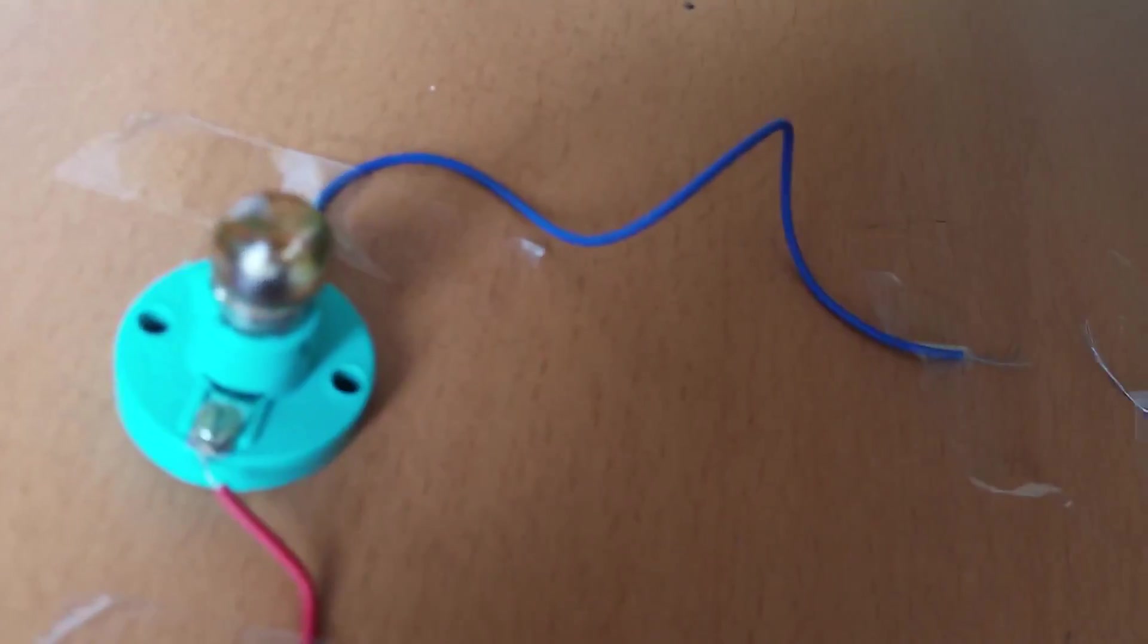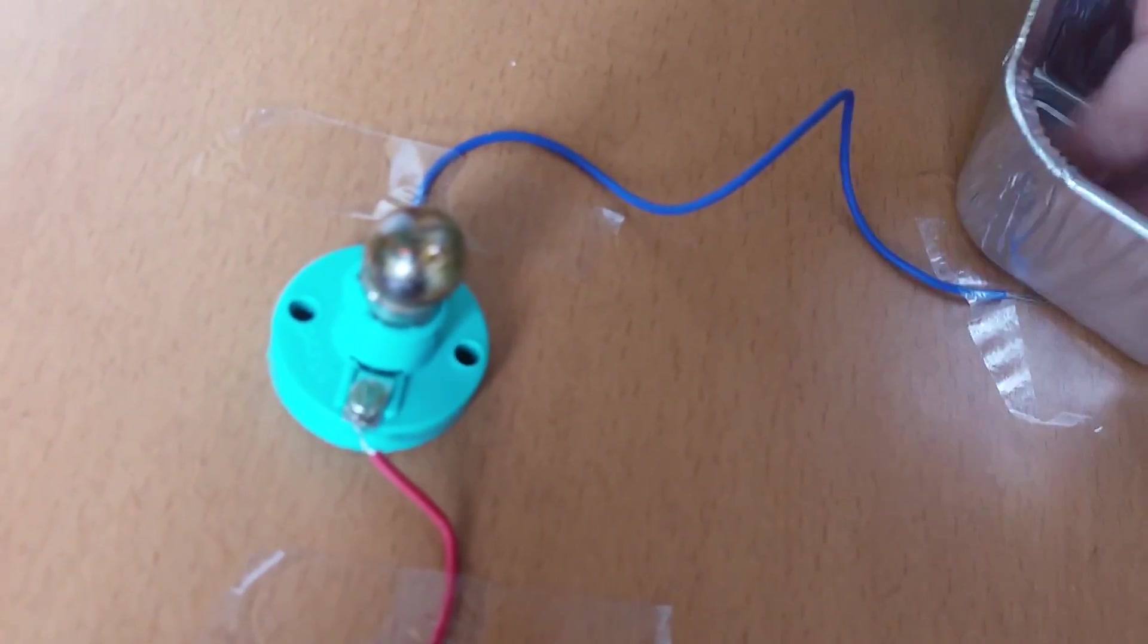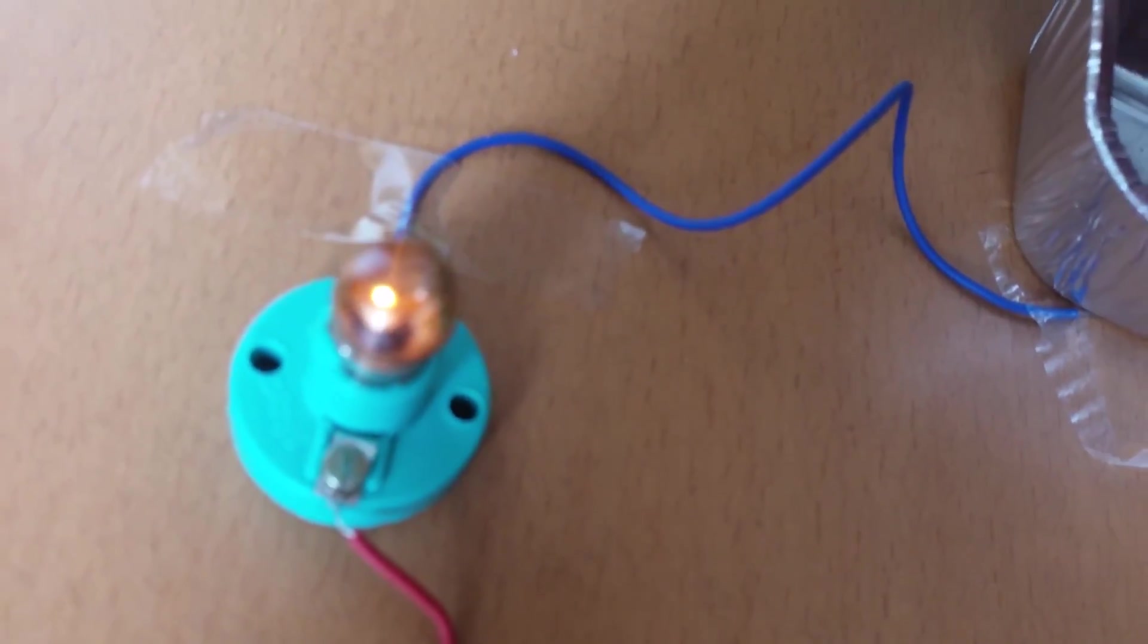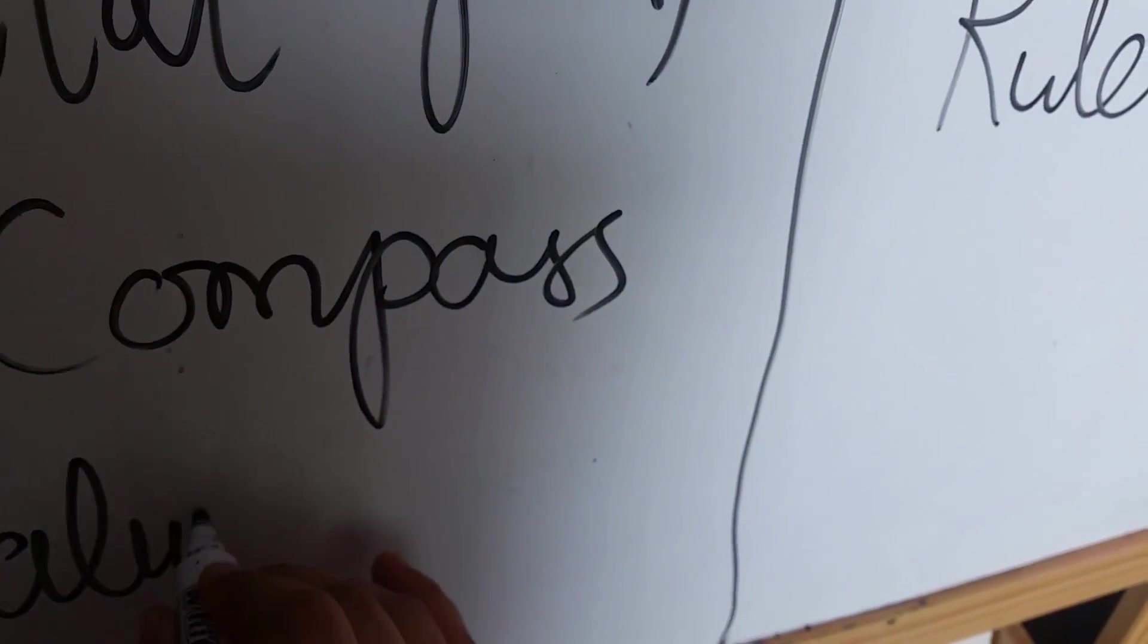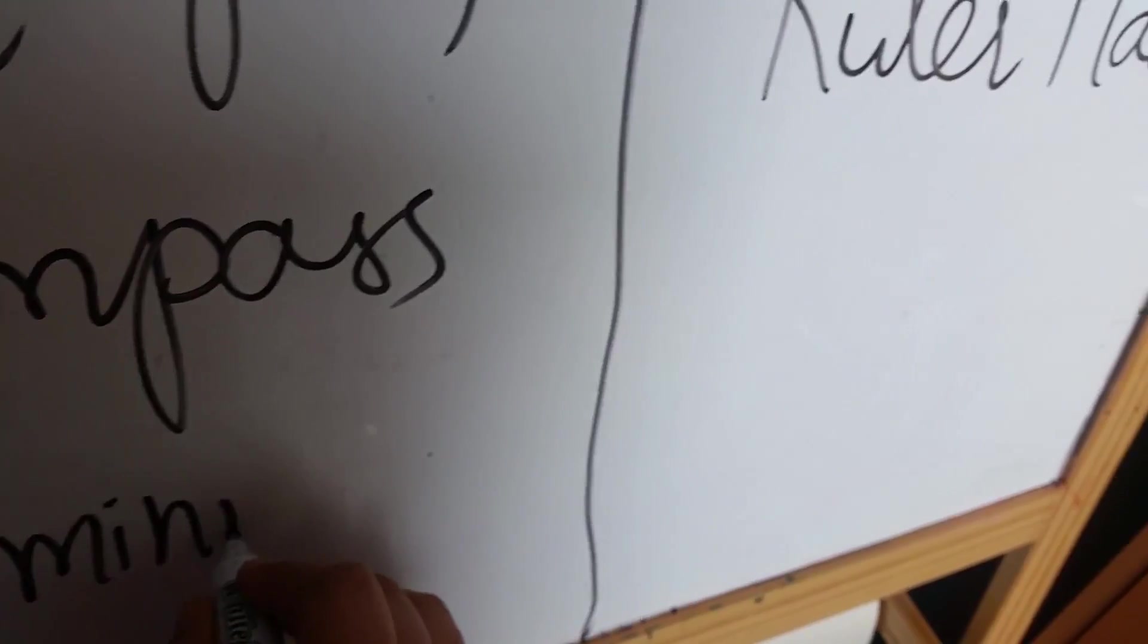Can you show it again? Okay. Yay. It's glowing. So it's a? What is it? Conductor. Conductor.